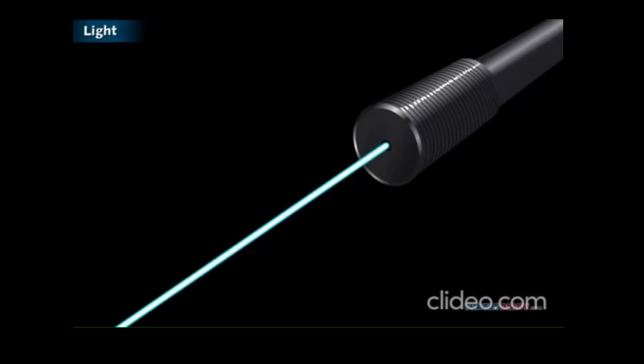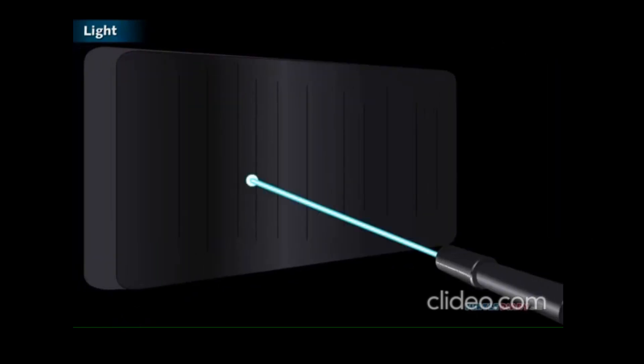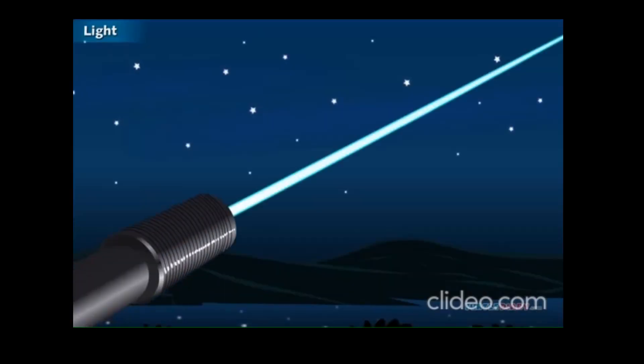Laser lights are thin, powerful beams of light. They are made of only one color. Lasers can be focused on a very small spot. Also, the light from a laser can go a long distance without spreading out like other lights do.